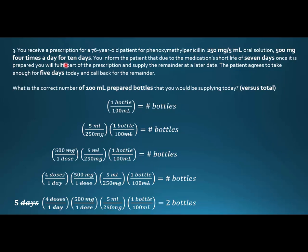This sometimes gives students trouble. If you think of it as 500 milligrams per dose, 4 doses a day, for 10 days, that might be a little bit easier when it comes to conversions. So I put 500 milligrams in one dose — now the milligrams are gone but I have doses. Then 4 doses per day gets rid of the doses.